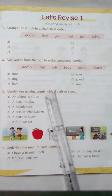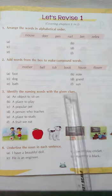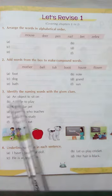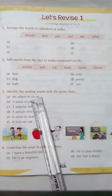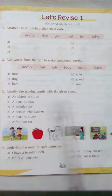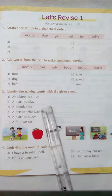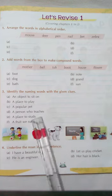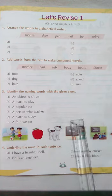Identify the naming words with the given clues. An object to sit on — chair. A place to play — playground. A popular pet — dog. A person who teaches — teacher. A place to study — school. A fruit we eat — apple.